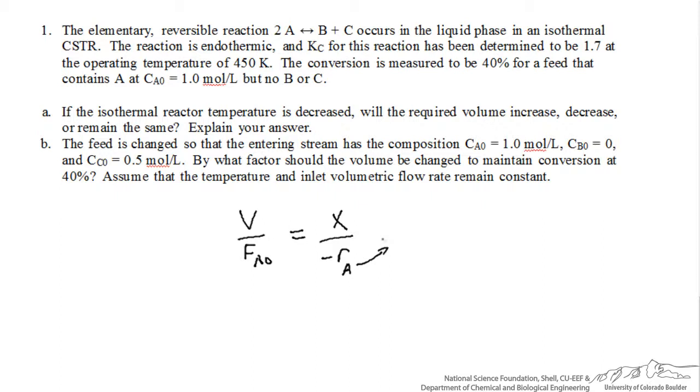The problem statement tells us the reaction is elementary and reversible. Because of this, we can write the rate of consumption of component A as equal to a forward rate constant times the concentration of A squared, because it's elementary. We raise the concentration to the power of the stoichiometric coefficient. We have a minus term with 1 over equilibrium constant because it's reversible, so we have Kc times the concentration of B times the concentration of C.